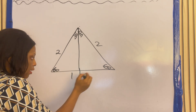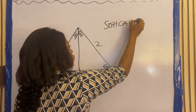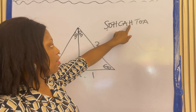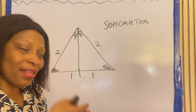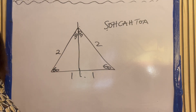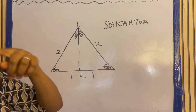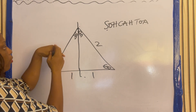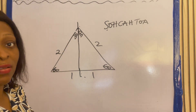Dividing this side into 2 gives you 1 here and 1 here. Remember your SOH-CAH-TOA: sine is opposite over hypotenuse, cosine is adjacent over hypotenuse, tan is opposite over adjacent. Your hypotenuse is the longest side. Looking at this triangle, this side is the longest — that's your hypotenuse. Your adjacent is where your angle is lying. If you are looking at 60°, your angle is lying here, so this is your adjacent. If you are looking at 30°, your angle is lying this way, so this is your adjacent. The remaining side is opposite.